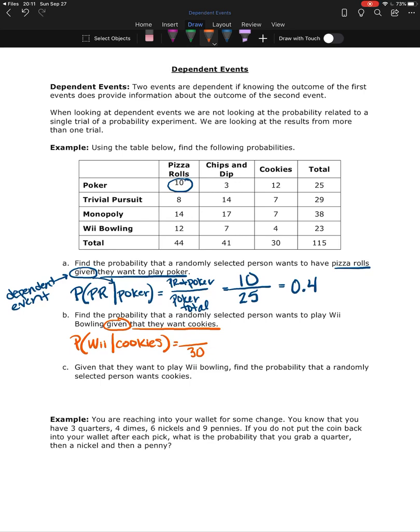Now of the 30 of you that are standing, how many of you want to play Wii Bowling? Raise your hand. So 30 people are standing, only the people that are standing, how many of them are going to raise their hand? Four of the 30 people that voted for cookies also voted for Wii Bowling, which is 0.1333.